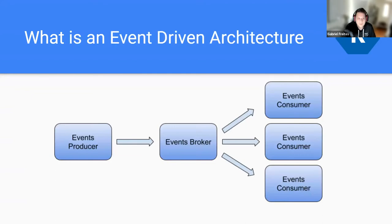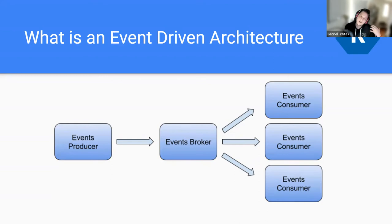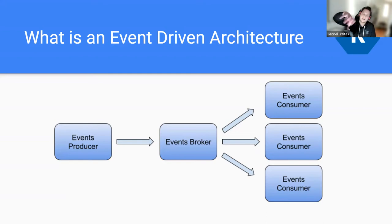Let's start with the beginning. What is an event-driven architecture? A high-level overview is that your architecture is mapped to react to events — events from any other application or any source you have. You have an event producer, that is the event source communicating with your application. You have generally some kind of event broker, which is an intermediary software that receives events and makes sure to send them to the event consumer — any application consuming those events.